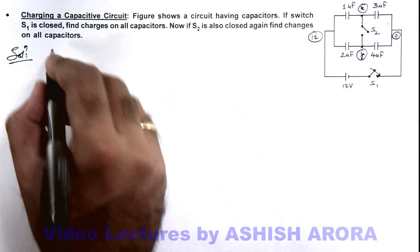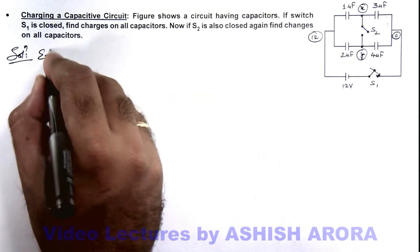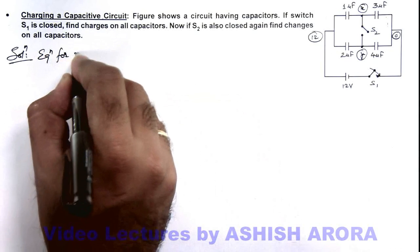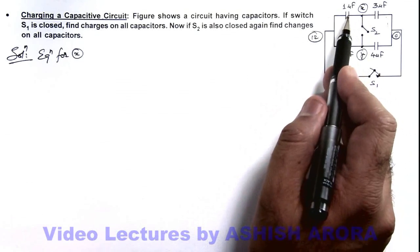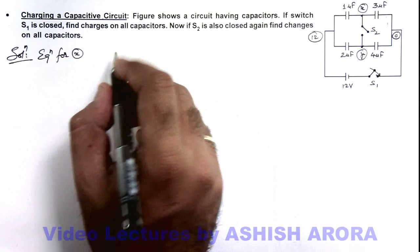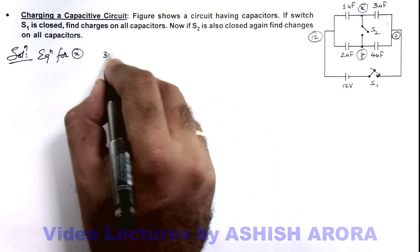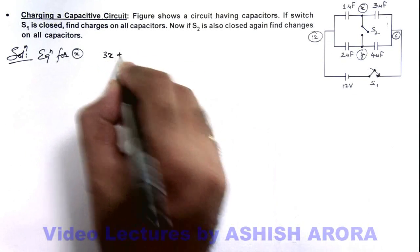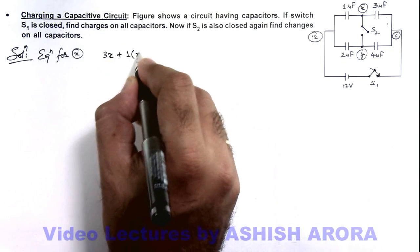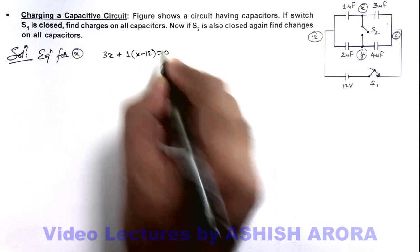Now if we write the equation for potential x, we can simply write it by summing the charges of these two plates to be zero, which we already studied. So it will be 3x plus 1 multiplied by x minus 12 equals zero.